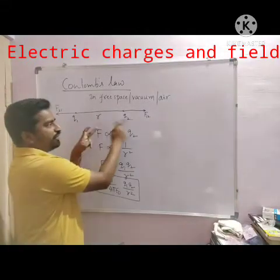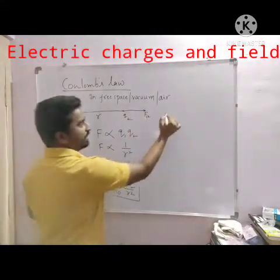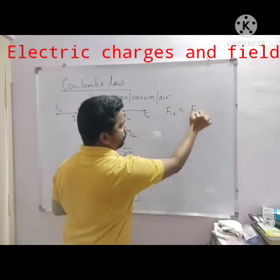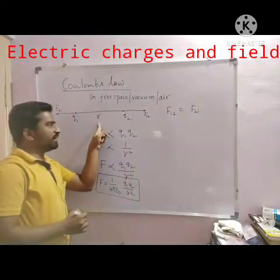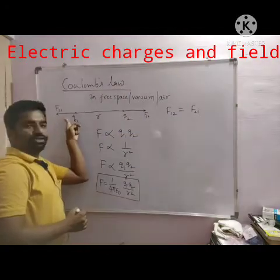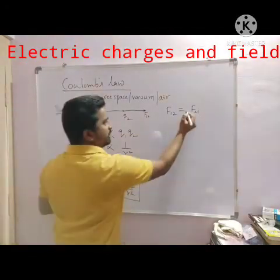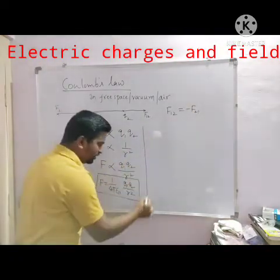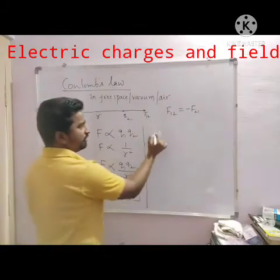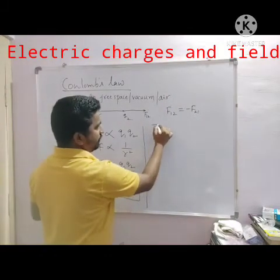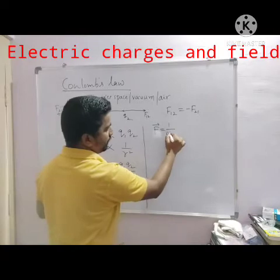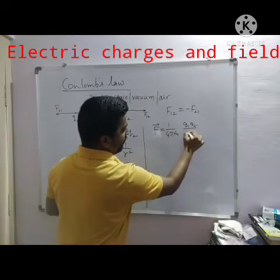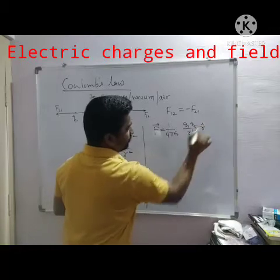The magnitude of these two forces are equal: F12 equals F21. But from the diagram, F12 is opposite in direction to F21. We can write Coulomb's law in vector form as F vector equals 1 divided by 4 pi epsilon naught times Q1 times Q2 divided by R squared, times R-cap.